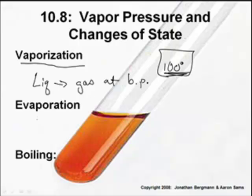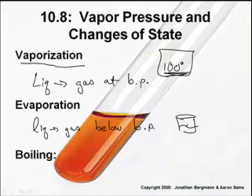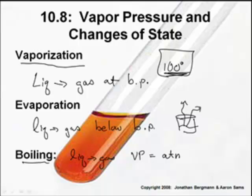Evaporation — we're still going from a liquid to a gas, but this occurs below the boiling point. You guys know that. If you take a beaker of water and you leave it out overnight, it will evaporate. It evaporates pretty quickly in a dry climate, but in a more moist climate it would evaporate more slowly. And boiling, of course, is a liquid to a gas, and that happens when the vapor pressure is equal to the atmospheric pressure.